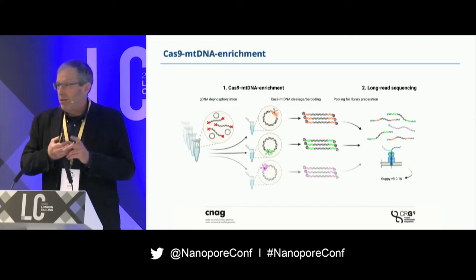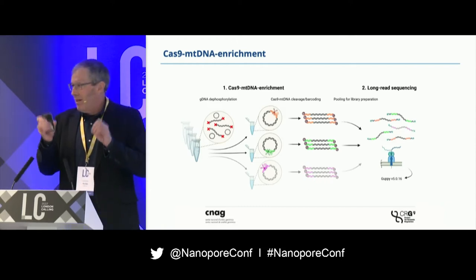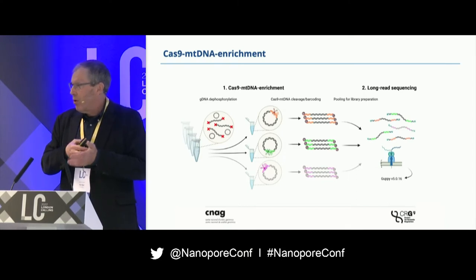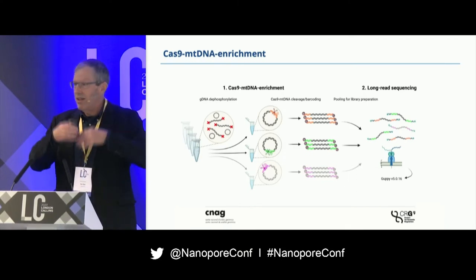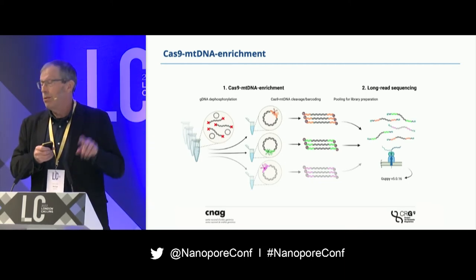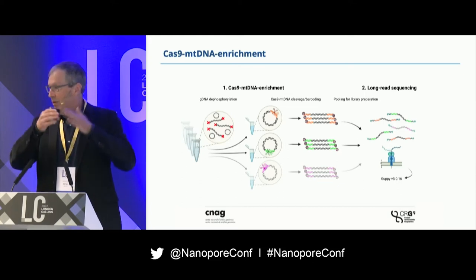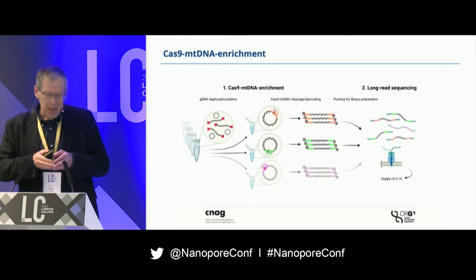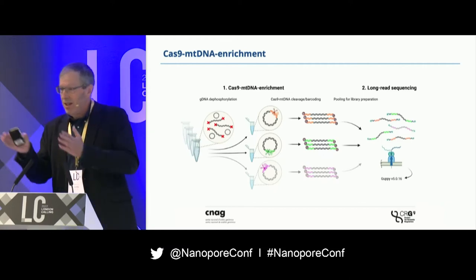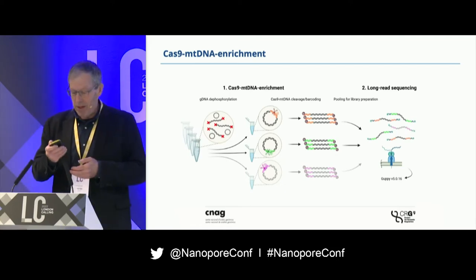Cas9 has a bad reputation in combination with nanopores because the Cas9 enzyme tends to stick onto the DNA and block pores, not run nicely or work perfectly. So what we actually do is we proteinase K digest the sample after we've opened them up. Then we pool them all together, put them through a single sample prep, stick them in a nanopore sequencer, and take the reads and base call them with Guppy.